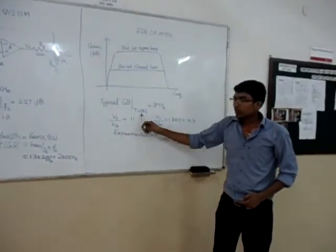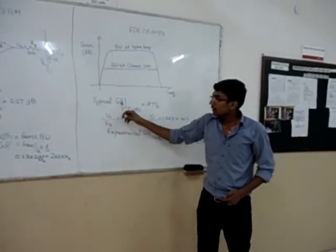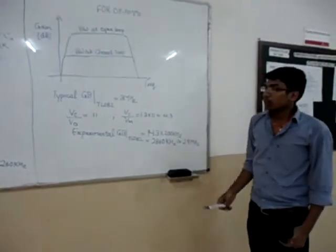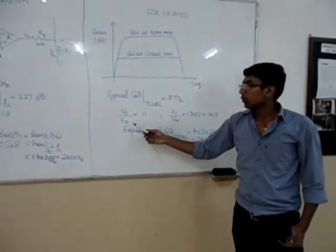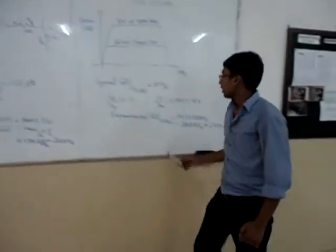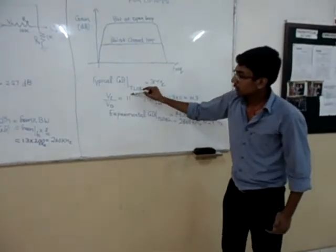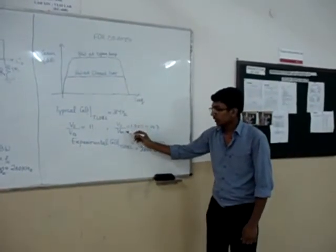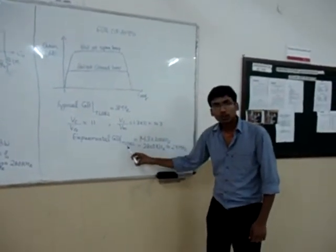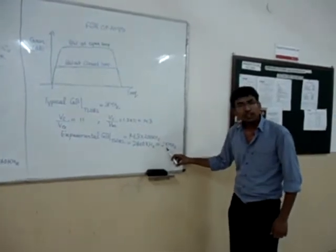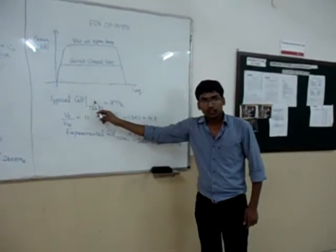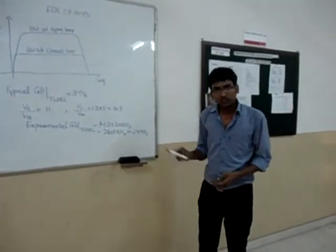And now coming to the TL082 part. Typical gain bandwidth product is equal to 3 megahertz which is the theoretical value. For calculating the experimental value we can obtain DC upon V0 equal to 11 from this circuit where 11 is the initial constant also. Here DC upon Vn equal to 14.3 and experimental gain bandwidth product of TL082 comes up to be 2.9 megahertz which is approximately equal to the typical gain bandwidth product. So our experiment stands true.